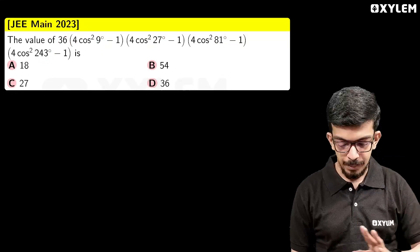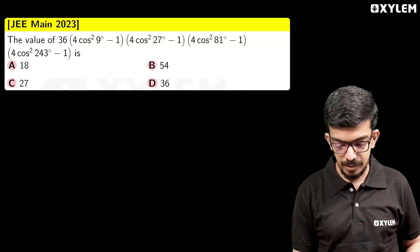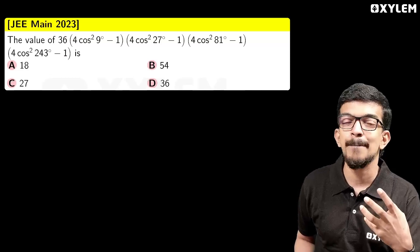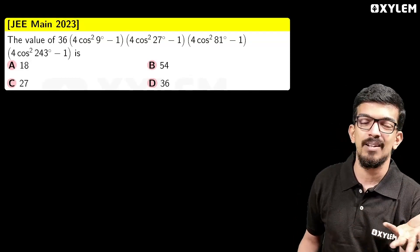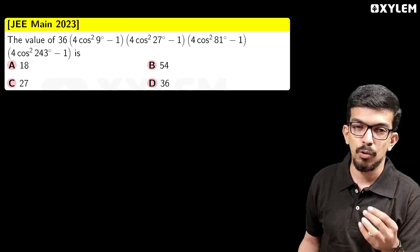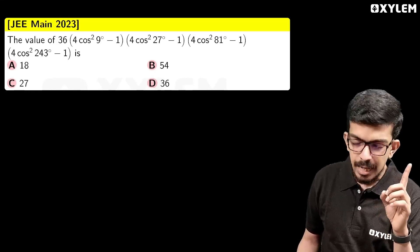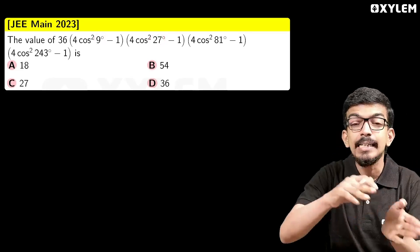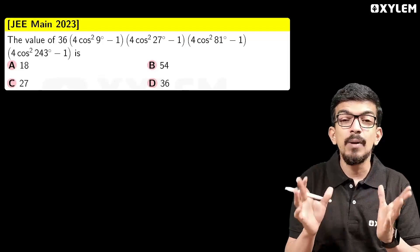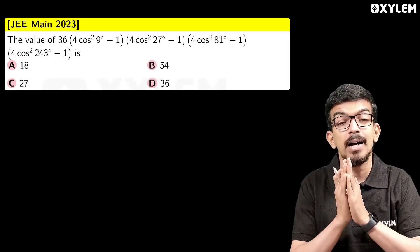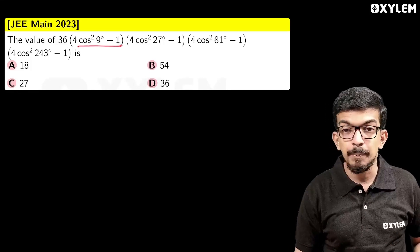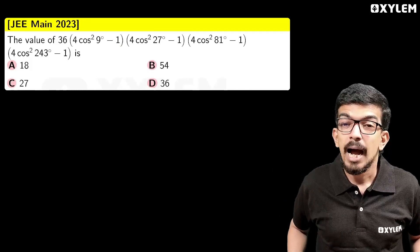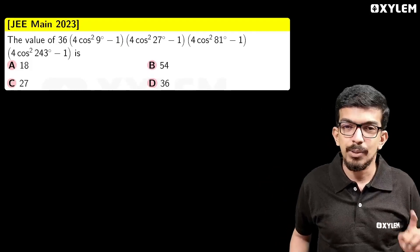We can see the number 36 out front. We can't simplify it to a single symbol directly. The key is to observe that 9 degrees, 27 degrees, 81 degrees, 243 degrees — each angle is triple the previous. I can see a triple-angle pattern here.